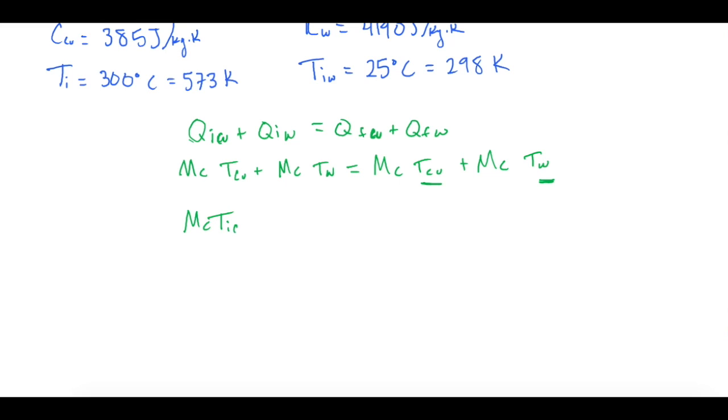We'll have mc times the initial temperature of copper plus mc times the initial temperature of water is going to equal mc of copper plus mc of water, and that is all going to equal the final temperature because it's the same.